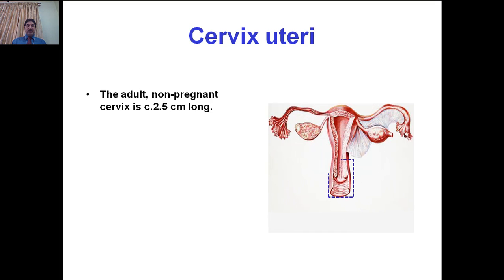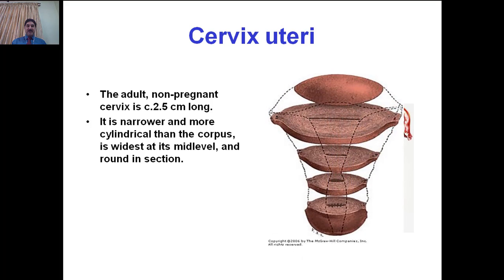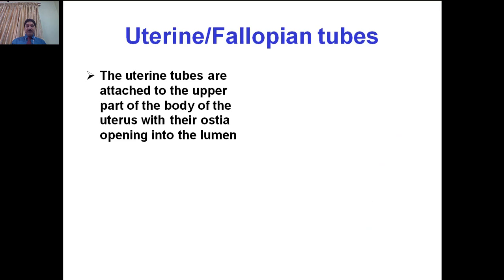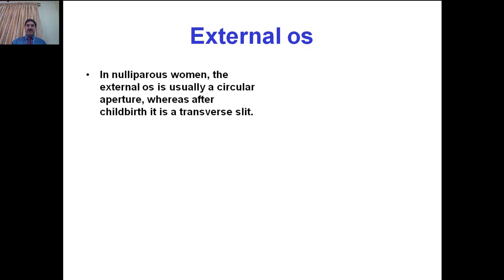The adult non-pregnant cervix is 2.5 cm long. It is narrower and more cylindrical than the corpus, widest at its mid-level and rounded in section. The body in the non-pregnant state has a cavity flattened anteroposteriorly, whereas the cervical cavity is rounded in shape. The upper end of the cervix communicates with the body of the uterus via the internal os, and the lower end opens into the vagina at the external os. The uterine tubes are attached to the upper part of the body with their ostia opening into the uterine cavity. The adult non-pregnant uterus is 7.5 cm long, 5 cm in breadth, 2.5 cm in thickness, and weighs about 30–40 grams.